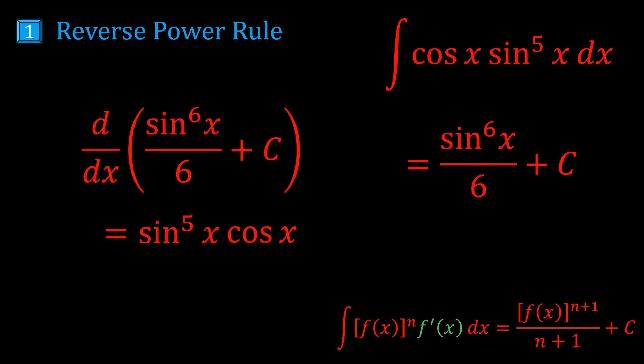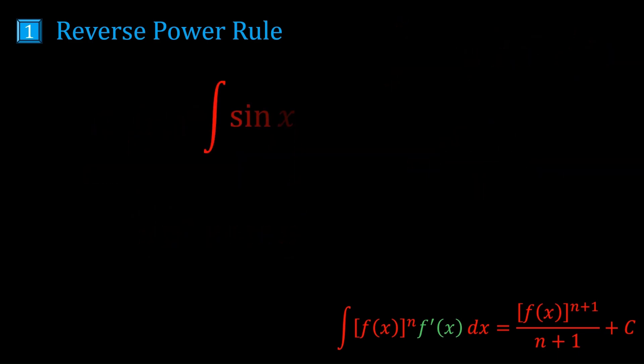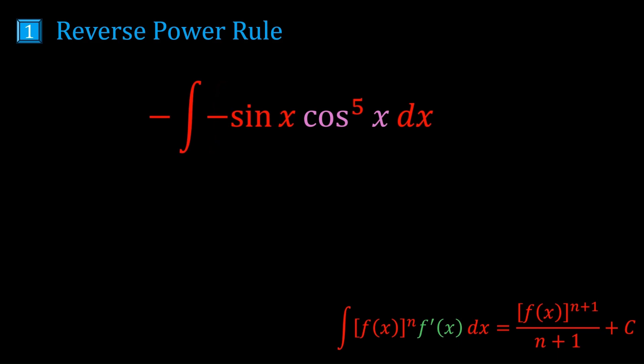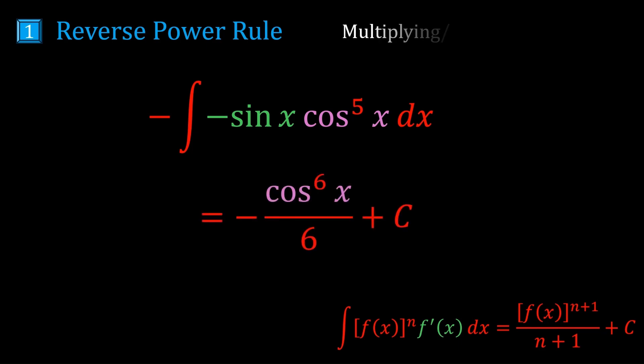For the next example, we have sin x times cos⁵x. We notice that cos x is being raised to some power, so we look at the derivative of cos x, which is minus sin x. We almost have that being multiplied here, but not quite. If we put a negative sign inside and a negative sign at the front, we don't change the integral, but we get it into the correct form because minus sin x is the derivative of cos x. So the answer is minus cos⁶x on 6 plus c. This uses the idea of multiplying and dividing by a constant to get the correct form.